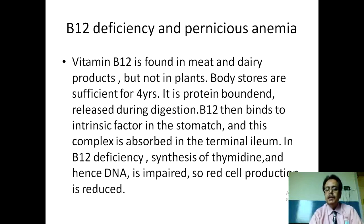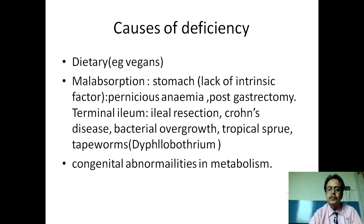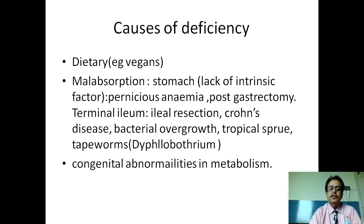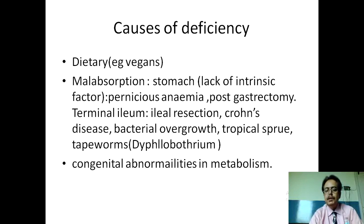In vitamin B12 deficiency, synthesis of thymidine and DNA is impaired so red cell production is reduced. Etiologies include dietary causes — vegans develop deficiency early. Malabsorptive states from stomach to terminal ileum include deficiency of intrinsic factor due to pernicious anemia, post-gastrectomy, terminal ileum diseases, ileal resection, Crohn's disease, bacterial overgrowth, tropical sprue, and tapeworm infestations such as Diphyllobothrium latum. Congenital abnormalities in metabolism also result in B12 deficiency.